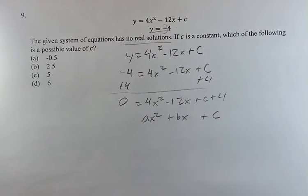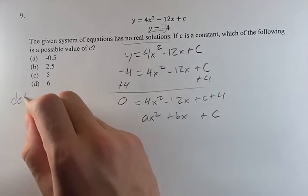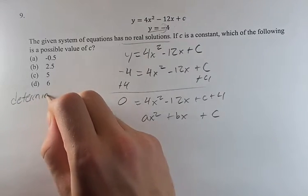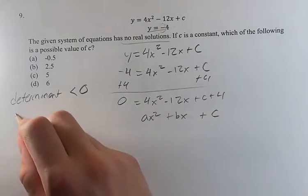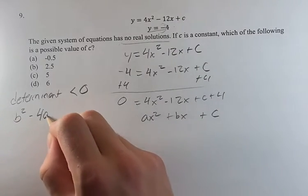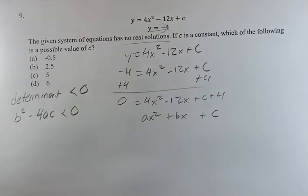So if we know there's no real solutions, that means that the discriminant of this equation is less than 0. b squared minus 4ac is less than 0.